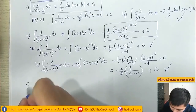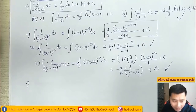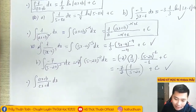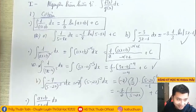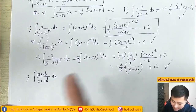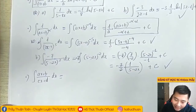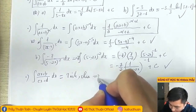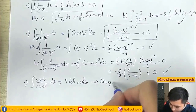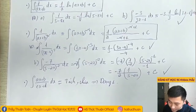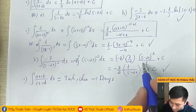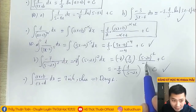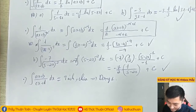Tiếp tục chuyển sang dạng thứ 3: hàm số bậc nhất chia bậc nhất, tức là (ax+b)/(cx+d) dx. Đây là dạng cơ bản thứ 3. Tất cả những dạng này thì chúng ta làm gì? Chỉ cần tách hoặc chia, để chuyển về dạng 1. Tách hay chia thì chuyển về dạng 1 là chúng ta ra hết.